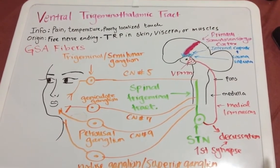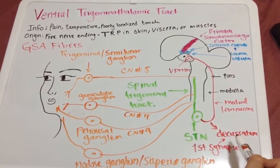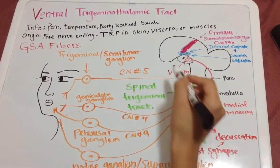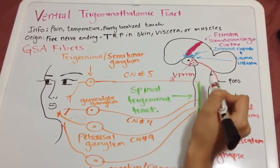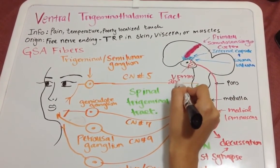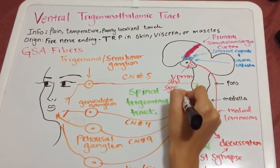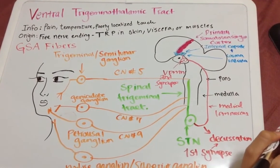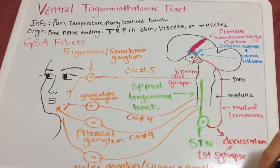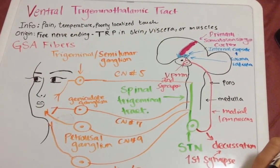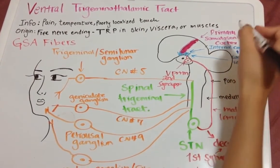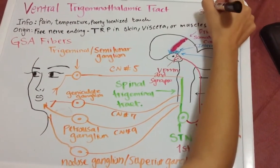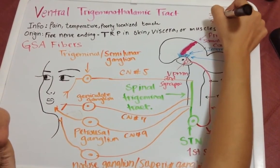Right after the first synapse, you have decussation via the medial lemniscus, then it goes up. Your second synapse would be at the VPM. Then the signal is taken via the projecting fibers, internal capsule, and corona radiata, and your third synapse would be at the primary somatosensory cortex.